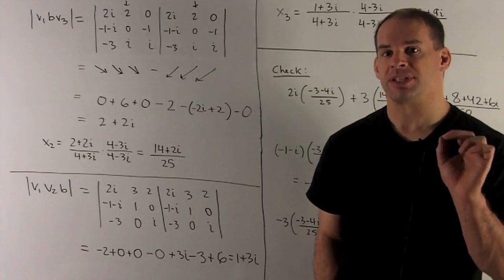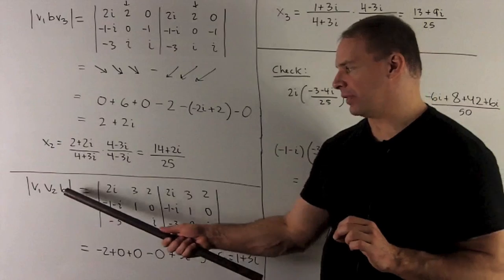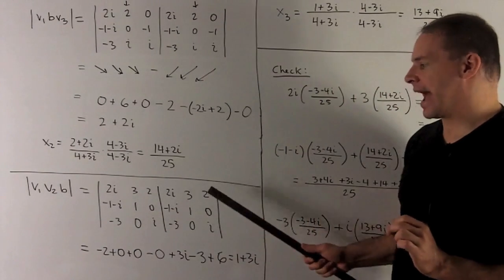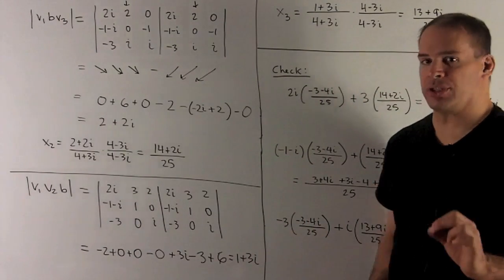X3, same idea. Replace V3 with B, six diagonal trick. That gives me 1 plus 3i.